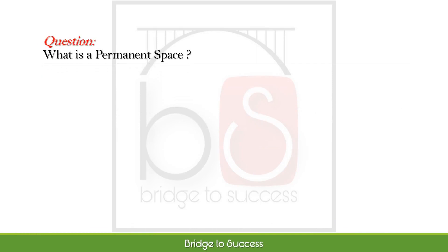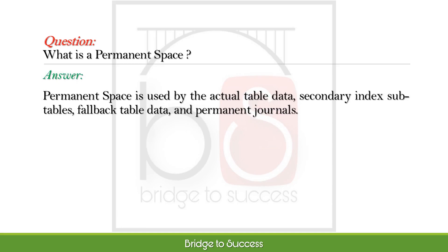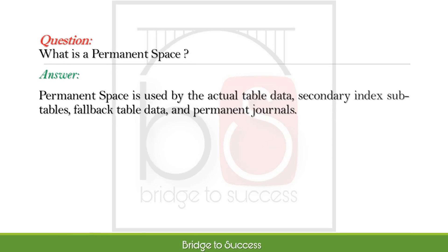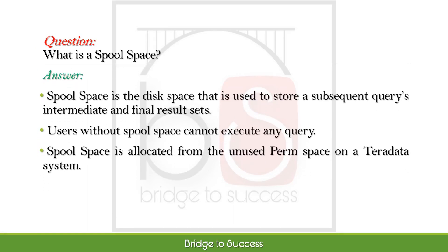What is permanent space? Permanent space is the space used by the actual table data, secondary index subtables, fallback table data, and permanent journals. What is spool space? Spool space is the disk space used to store a query's intermediate and final result sets. Users without spool space cannot execute any query. Spool space is allocated from the unused perm space on a Teradata system.